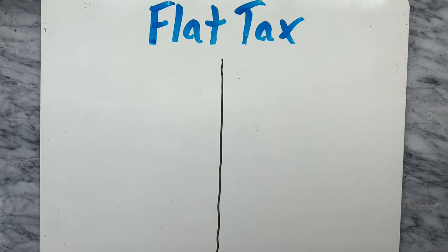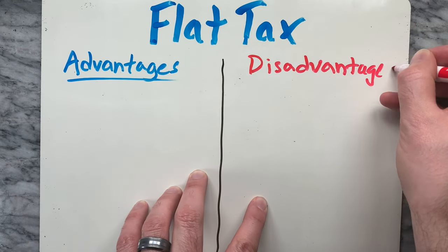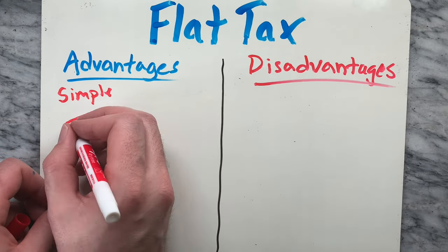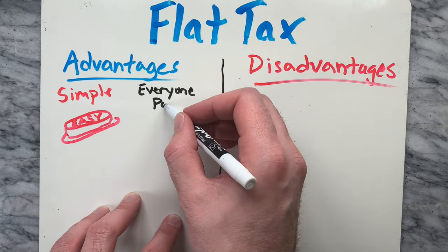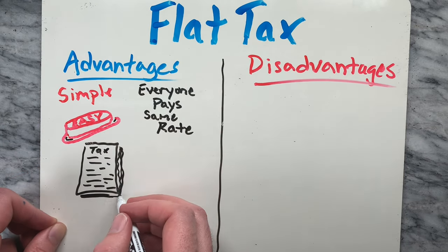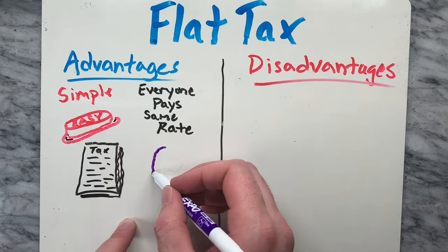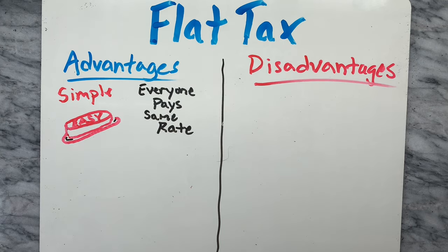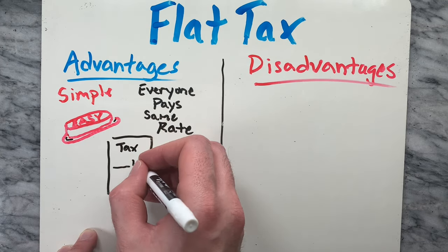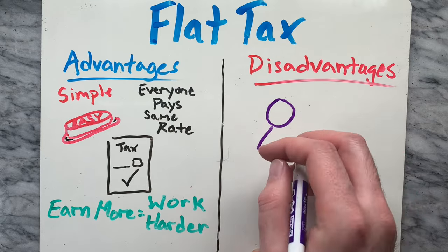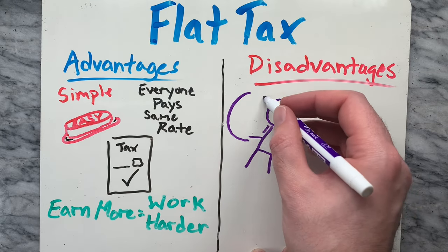Now let's look at the advantages and disadvantages of a flat tax system. Those who support a flat tax point out the advantage of its simplicity — everyone pays taxes at the same rate. For example, in the US, the complexity of the progressive tax system costs taxpayers a lot of money to implement. However, with a flat tax, everyone pays the uniform rate, reducing the cost of its implementation. Flat taxes also do not discourage high earners from earning more, or the poor from striving to earn more.